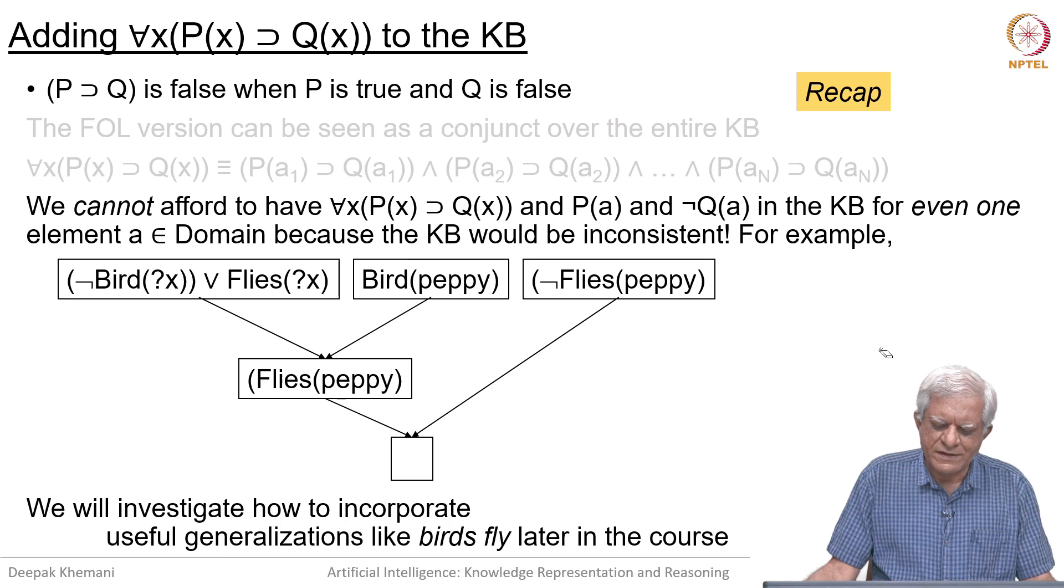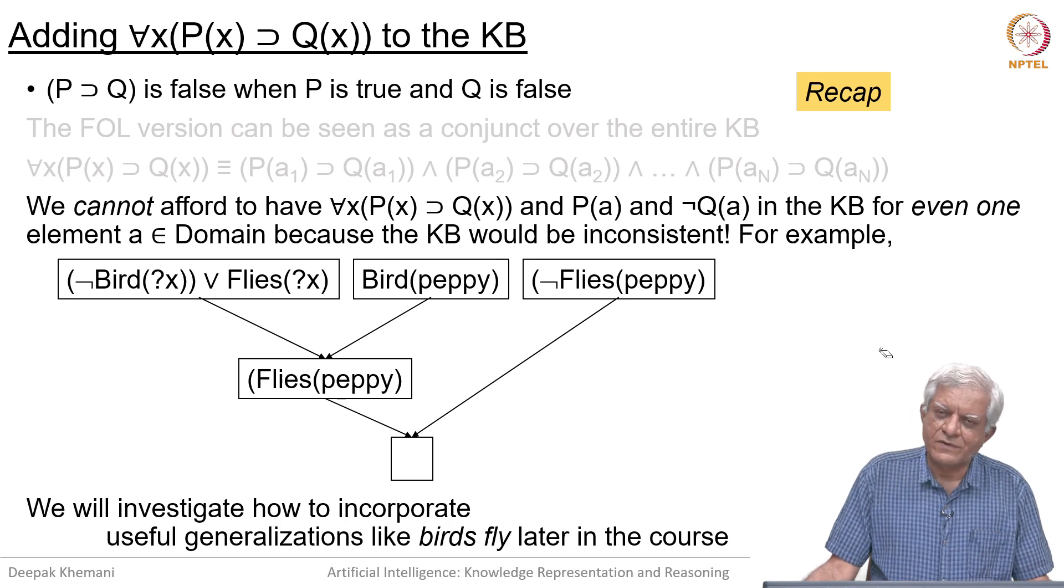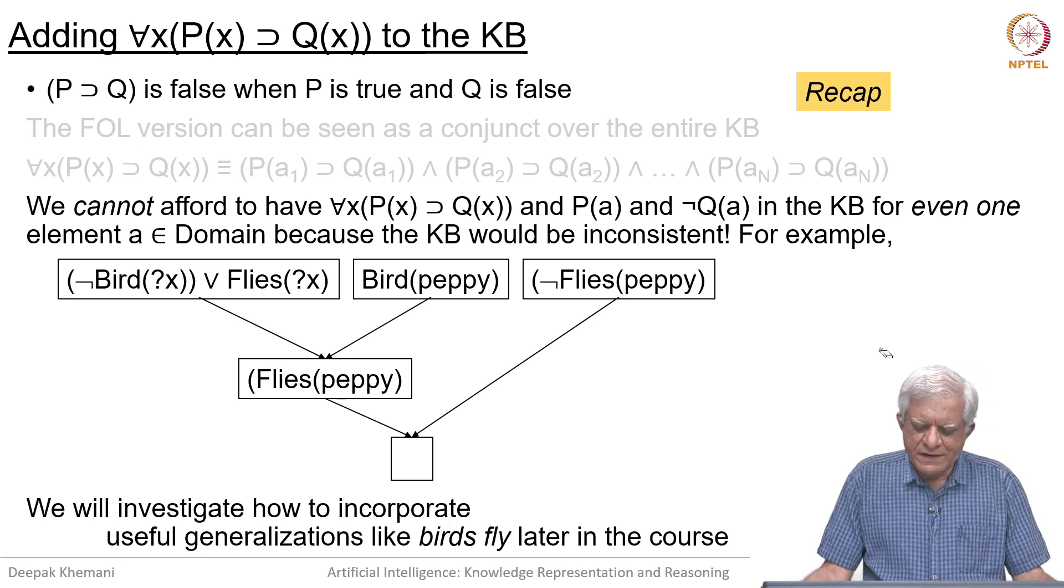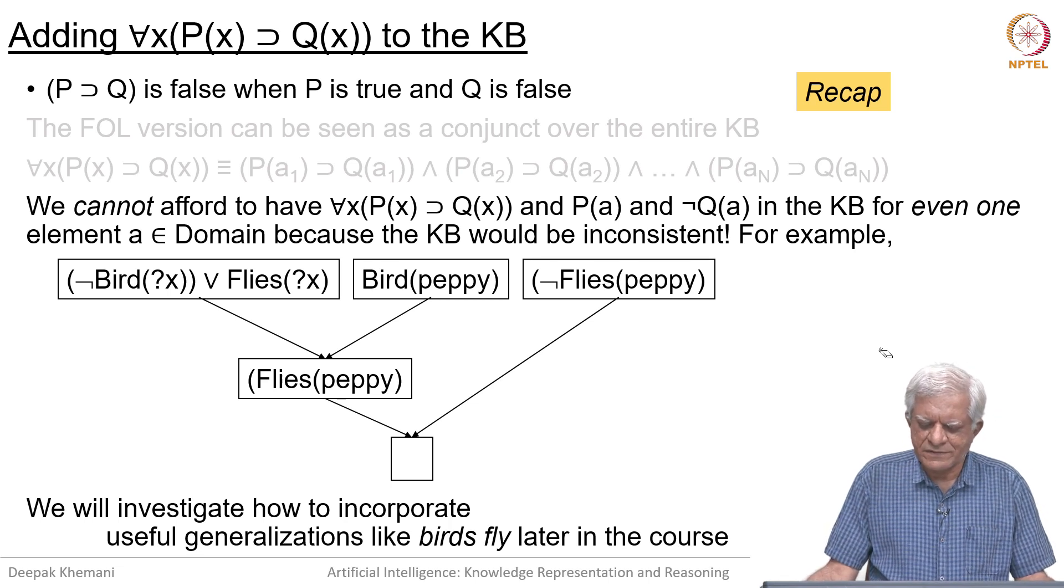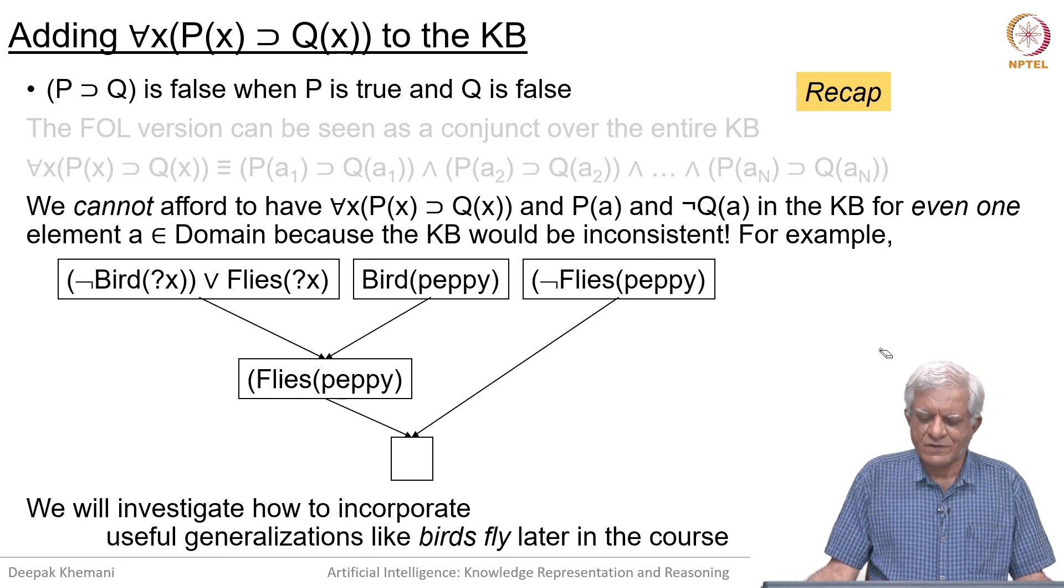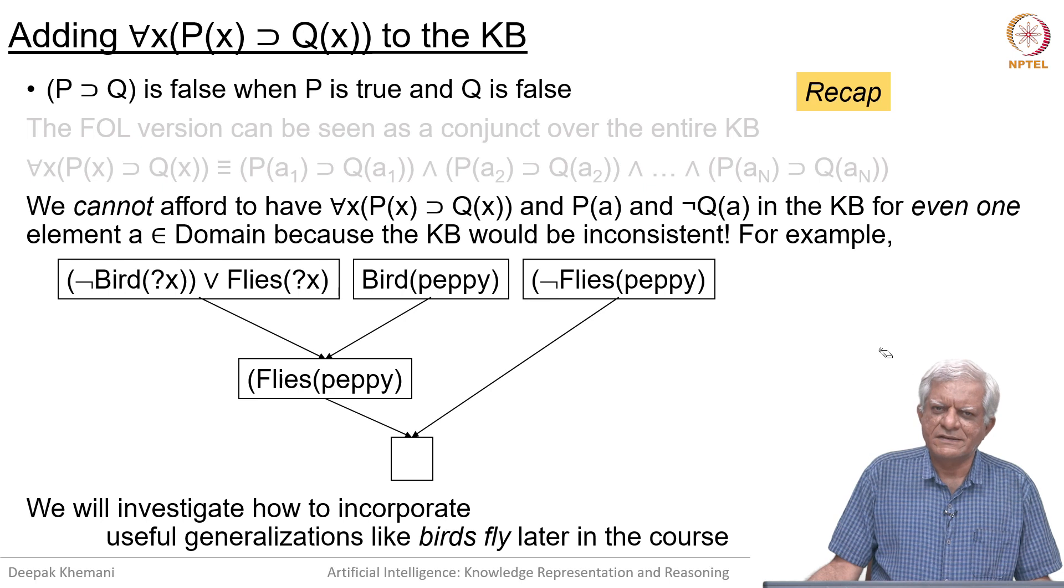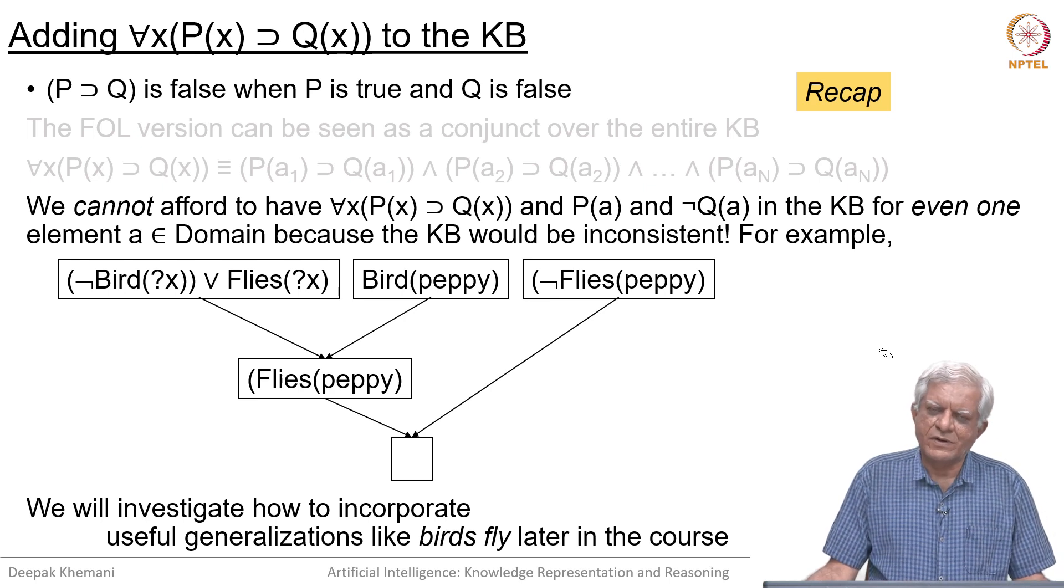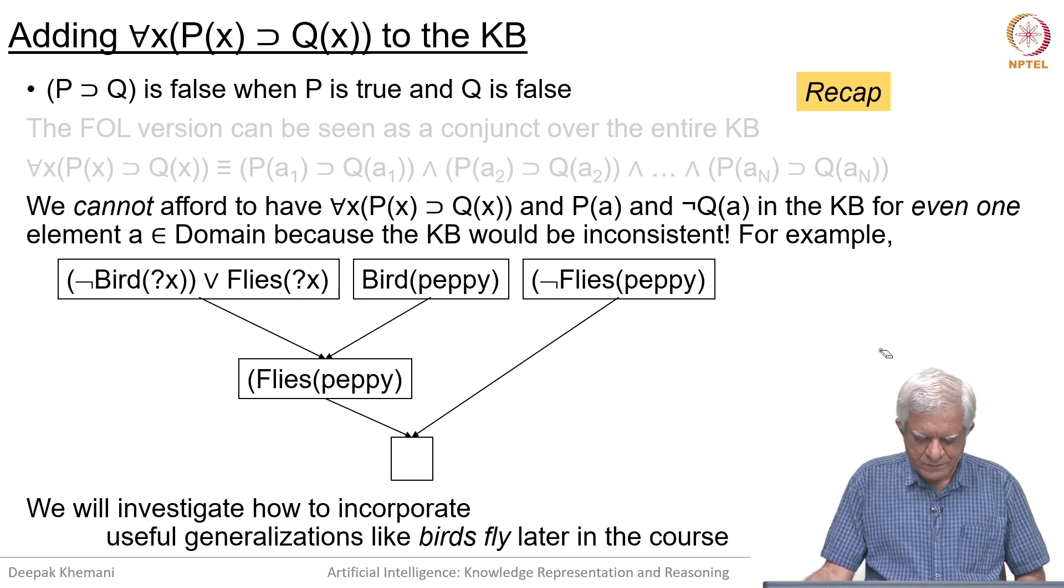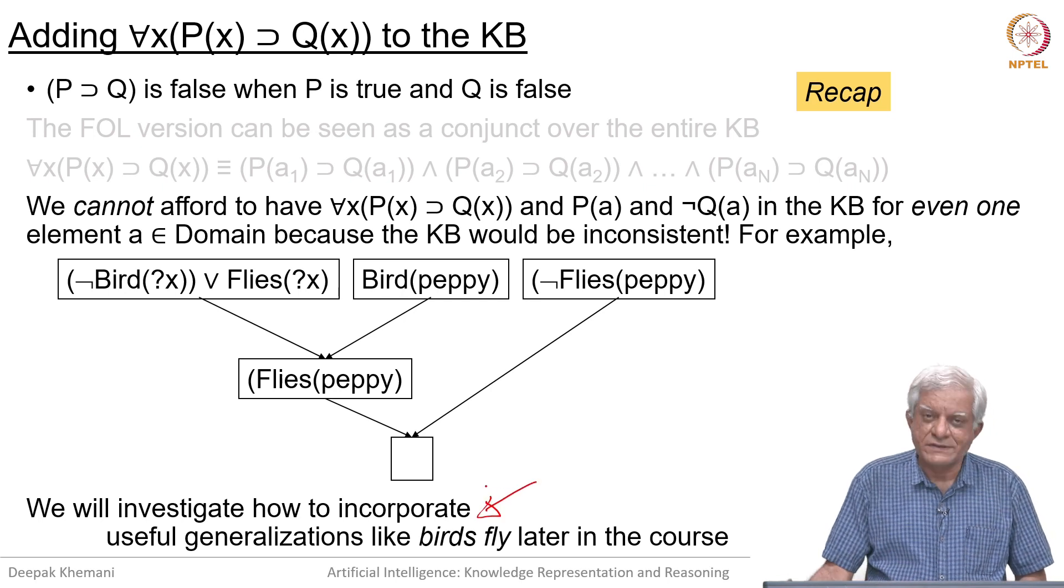This is an older slide. We had said that if you are using the implication statement that for all x, bird(x) implies flies(x), and then you get an instance of a bird, for example, Peppy who could be a penguin who does not fly, the moment you add that to your knowledge base that there is a bird which does not fly it makes the knowledge base inconsistent. We have observed earlier that we do not like our knowledge bases to be inconsistent because from inconsistency you can derive anything that you want, whereas we would like our knowledge bases to be meaningful. We had said that we will look at how to incorporate this kind of reasoning later in the course. This is what we are doing now.